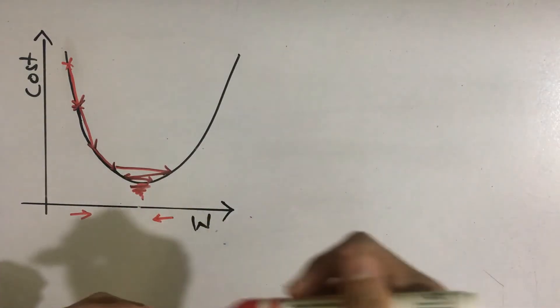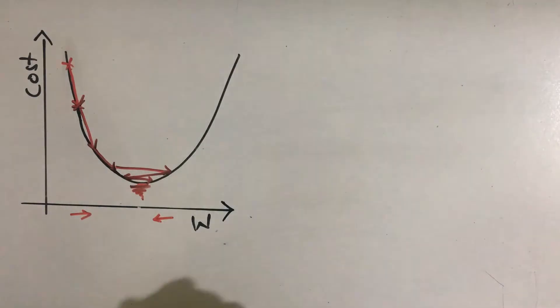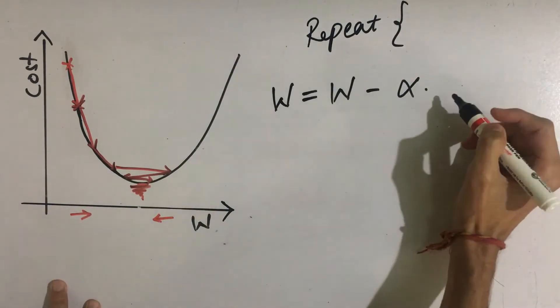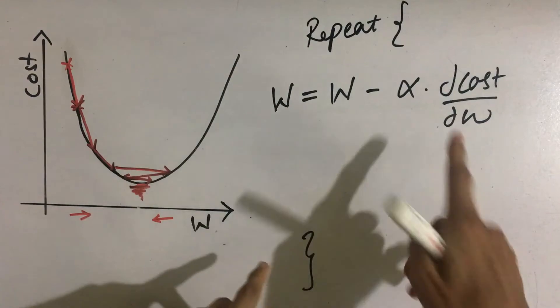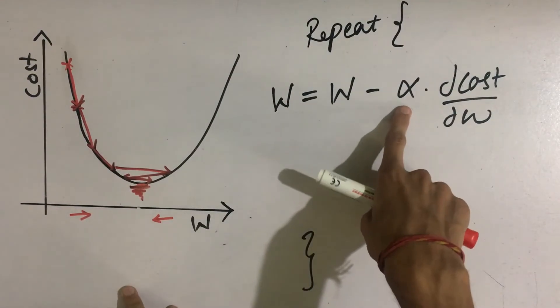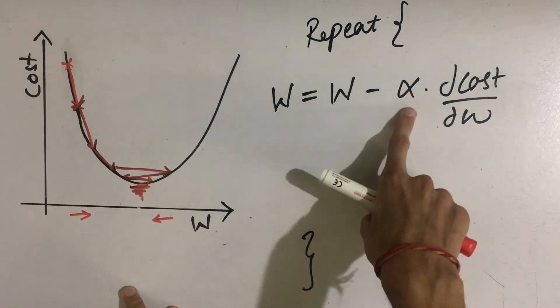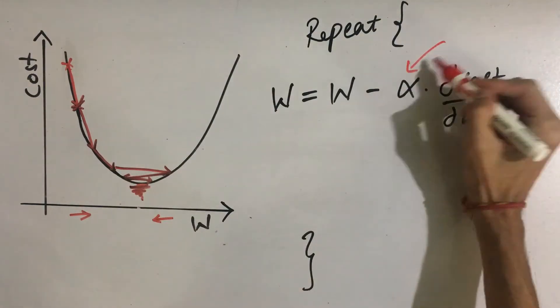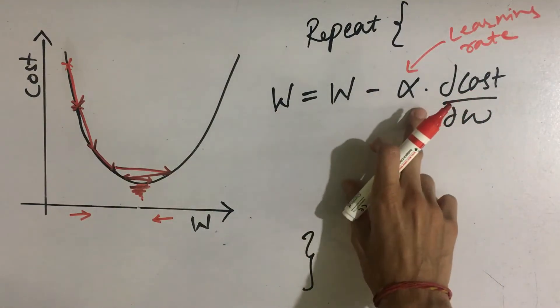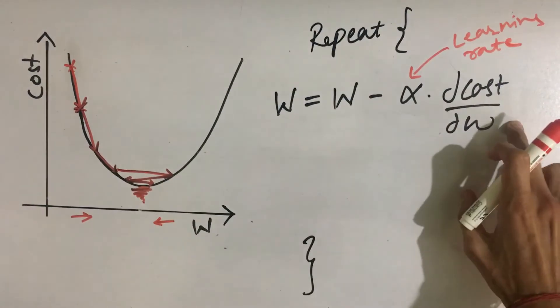We can do this by repeating a step which is given by w = w - alpha times dcost/dw. Now here alpha is a very small quantity, a positive constant number which is called learning rate.